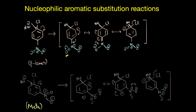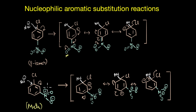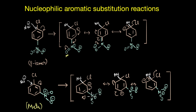Whereas in the case of the meta isomer, no such delocalization is possible. The negative charge remains stuck on the less electronegative carbon atom and cannot move on to the more electronegative oxygen atom. That means electron density pretty much stays within the ring and does not decrease due to the presence of an electron withdrawing group. So having a nitro group at the meta position is not of much use, as it does not decrease electron density in the ring or make it electrophilic enough for a nucleophile to attack. This is why the rate of the reaction is much faster for ortho and para isomers but very slow for the meta isomer.